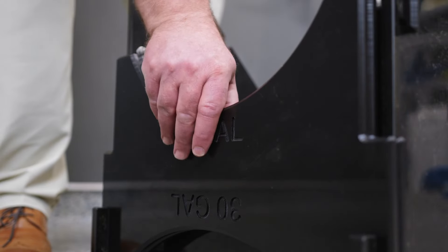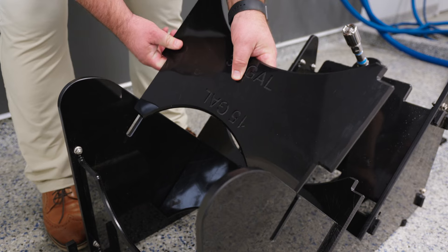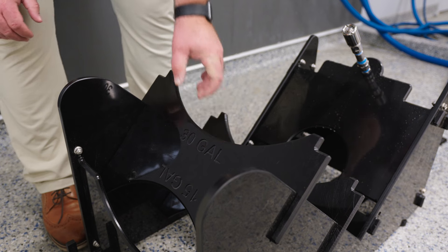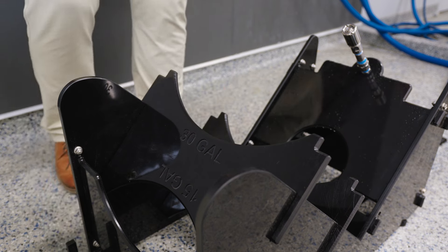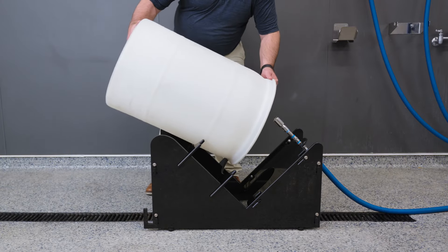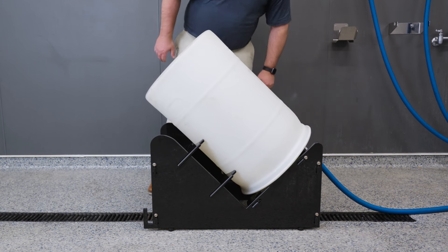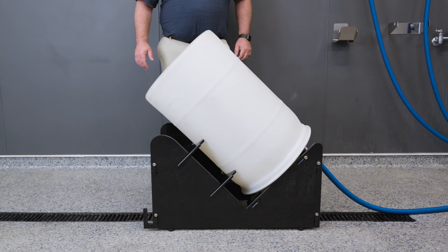Every drum rinse base is adjustable for rinsing 30 and 15 gallon drums with the adapters that are included with the base and stored right on the end. These adapter plates simply raise the 30 gallon drum into position to work with the standard location of the spinner ball on the base.